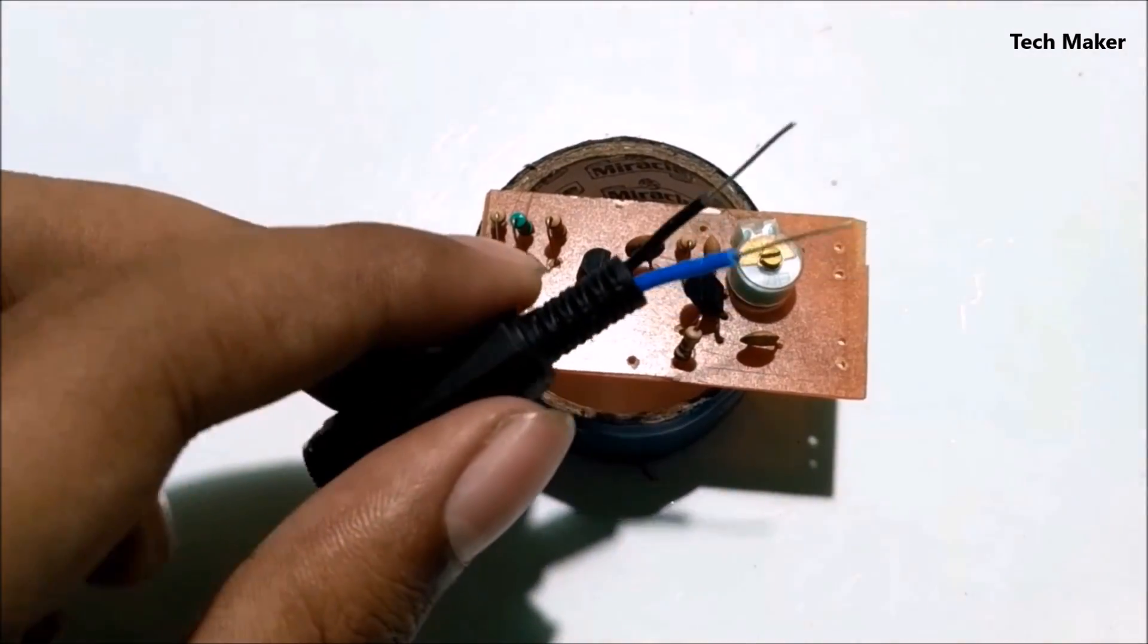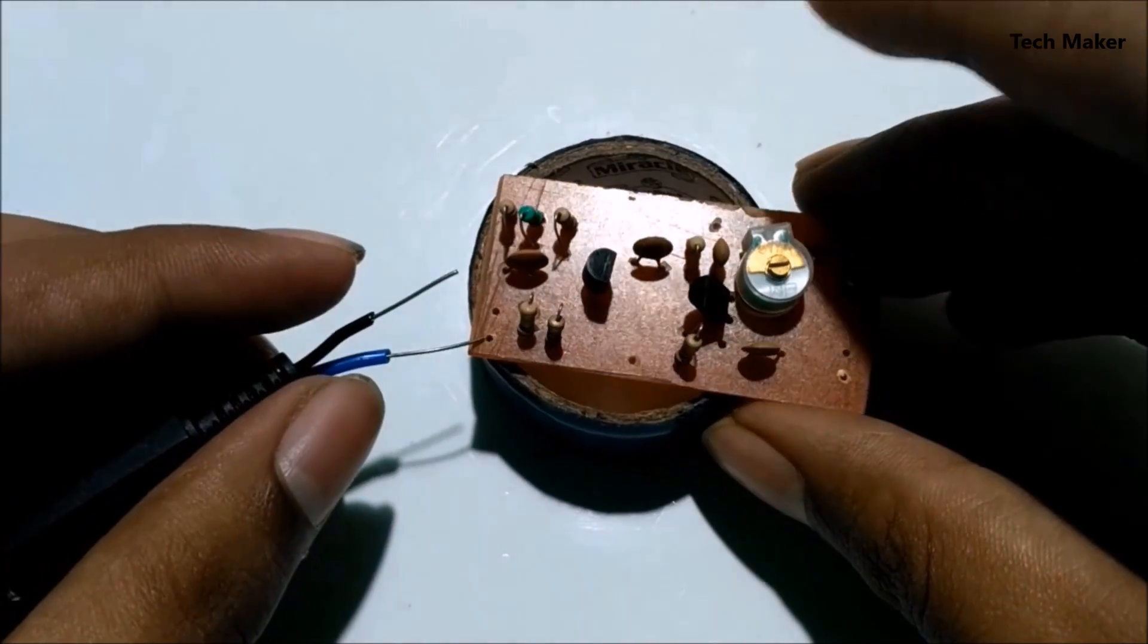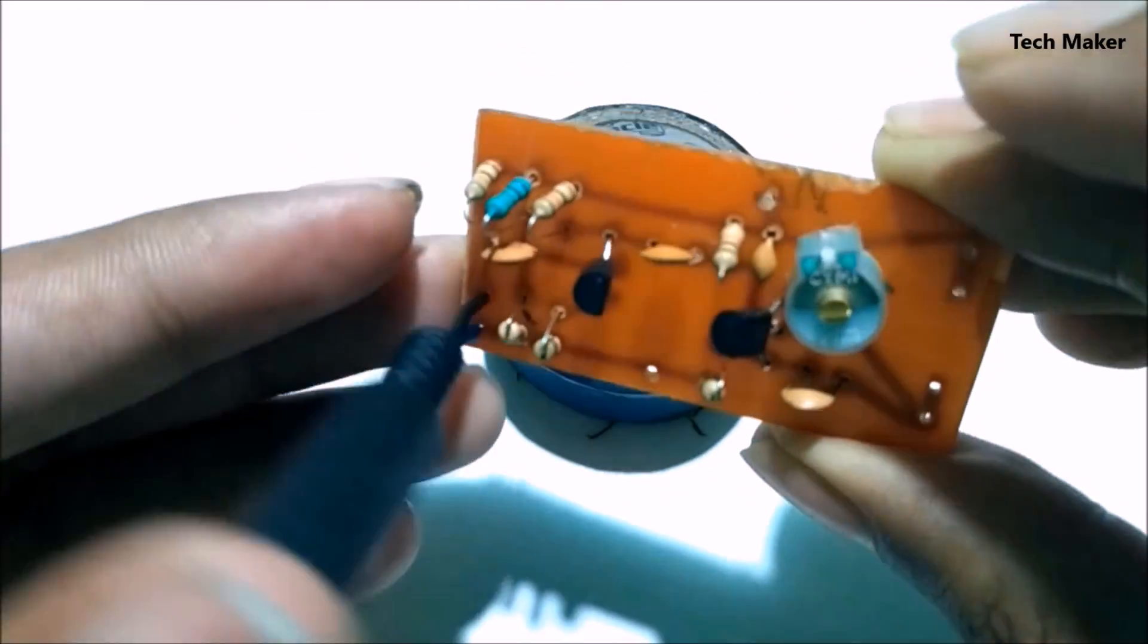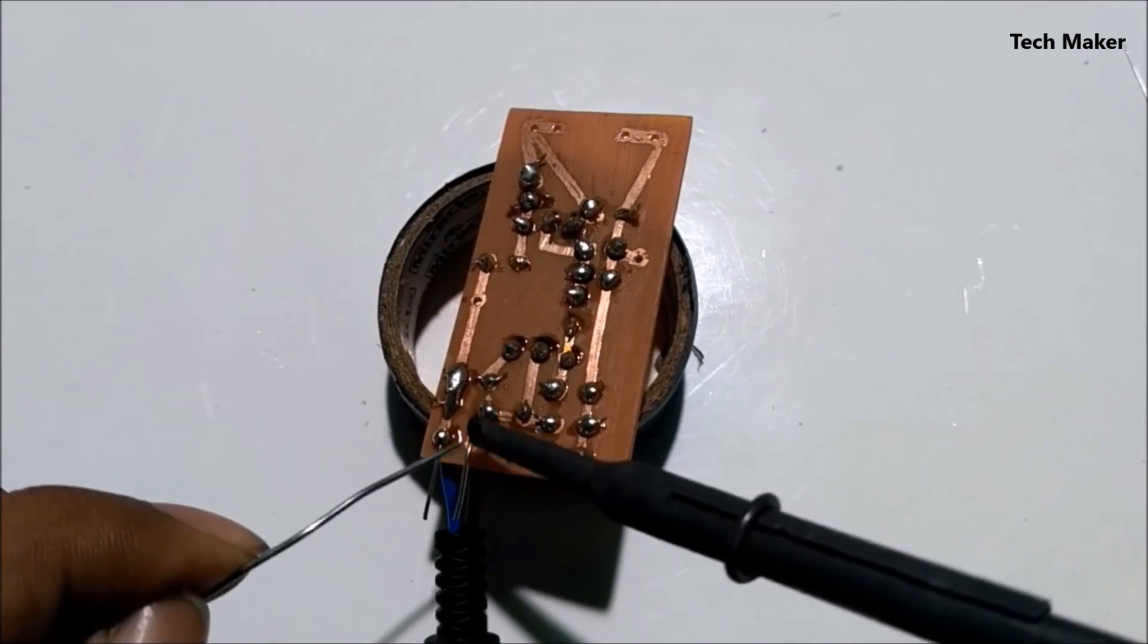Now solder the jack to the PCB. Since the mic has a polarity, make sure that the positive terminal goes to the base of the transistor.